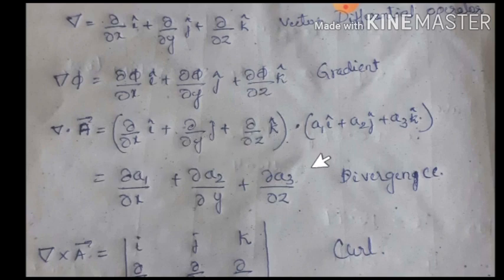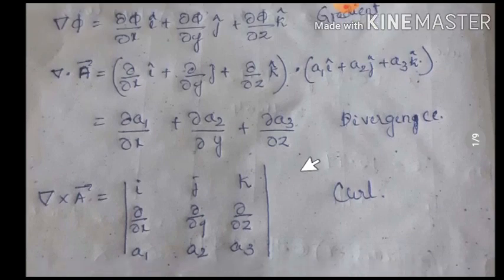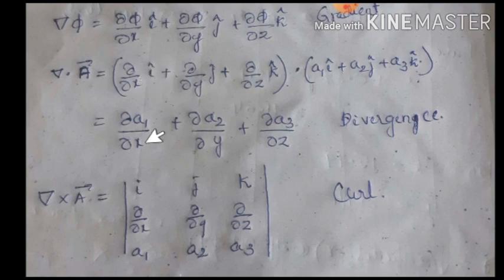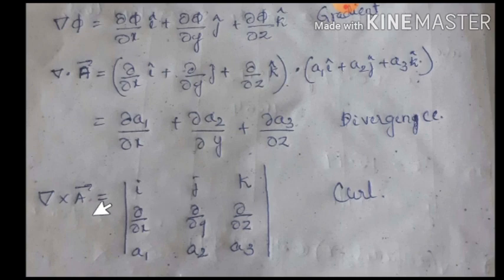Curl of a vector function is the cross product, evaluated as a determinant. The first row contains unit vectors i, j, k. The second row contains the coefficients of del: partial by partial x, partial by partial y, partial by partial z. The third row contains a1, a2, a3 — the coefficients of i, j, k of vector A respectively. Solving this determinant gives the curl.